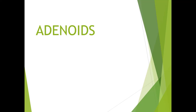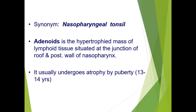Today we will discuss another very important topic: adenoids. Adenoids are a mass of lymphoid tissue situated at the junction of the roof and the posterior wall of the nasopharynx. They are also called nasopharyngeal tonsils. The other tonsils present in this area are the tubal tonsils around the tube opening, the lingual tonsils at the base of tongue, and the palatine tonsils in the oropharynx. These four masses of lymphoid tissue form a ring called Waldeyer's ring. The adenoids usually undergo atrophy by puberty, at the age of 13 to 14 years.